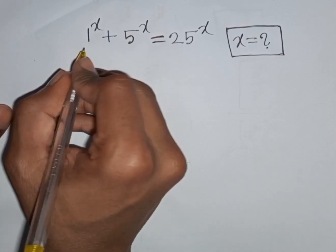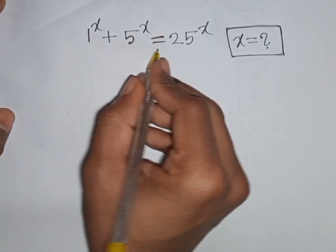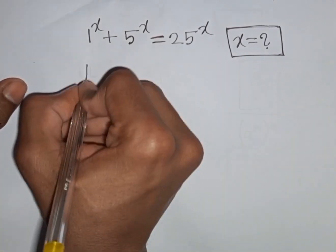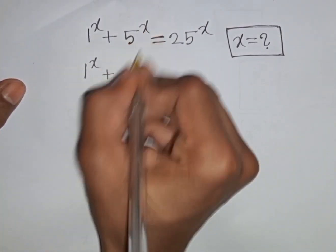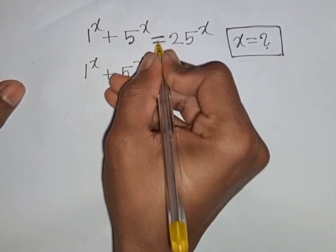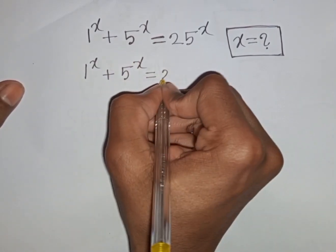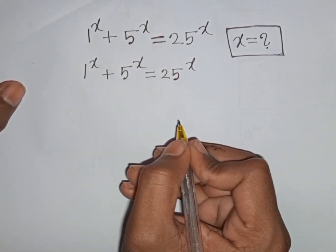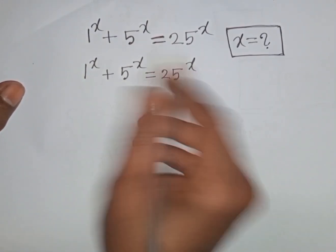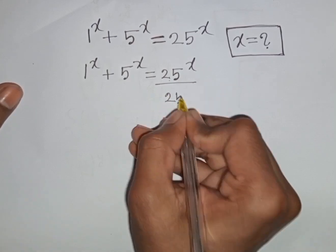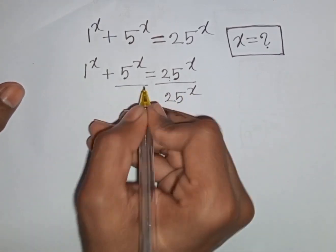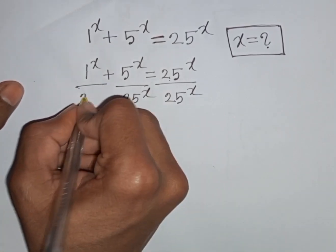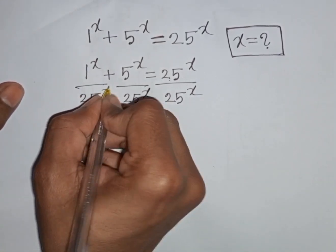How to solve 1 power x plus 5 power x is equal to 25 power x. Find the value of x. So we have 1 power x plus 5 power x is equal to 25 power x. Now we divide both sides by 25 power x.